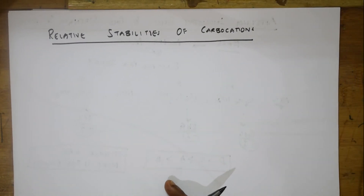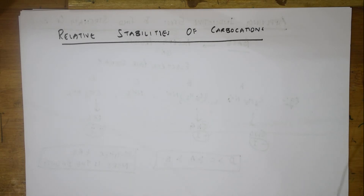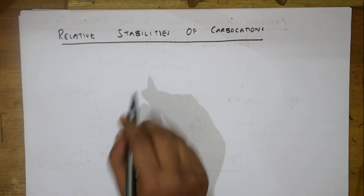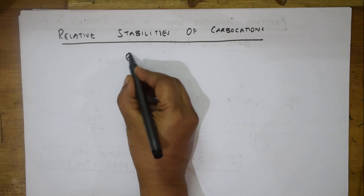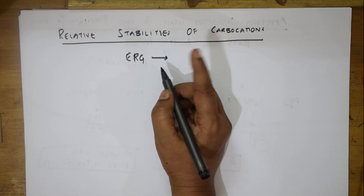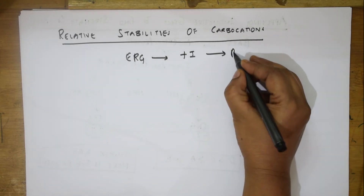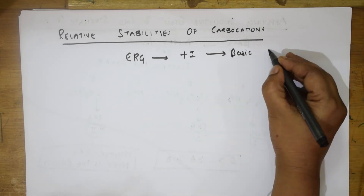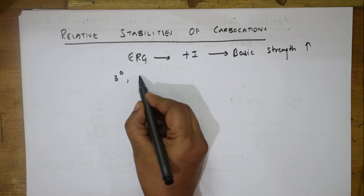Now let us apply the same concept to the relative stability of carbocations. We have tertiary, secondary, primary, and methyl carbocations. We relate inductive effect to these — electron-releasing groups show plus-I effect, and when plus-I effect is more, the basicity and stability also increase.